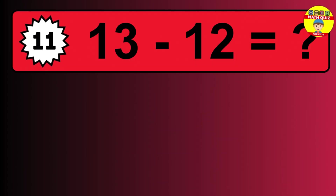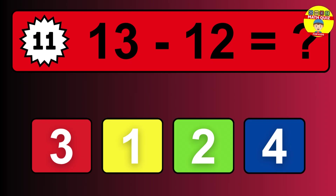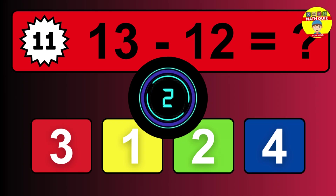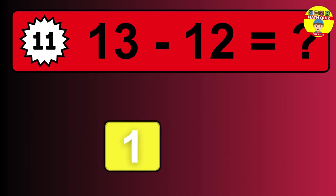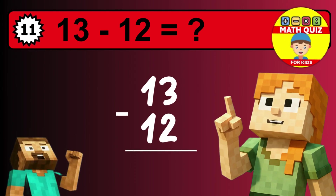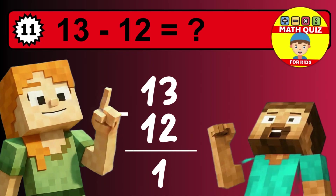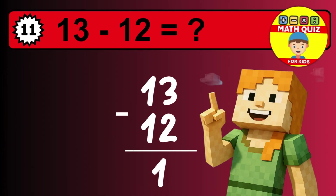What is 13 minus 12? Time to think. Let's solve this step by step. We start with the units: 3 minus 2 is 1. Then we go to the tens: 1 minus 1 is 0. The final answer is 1.